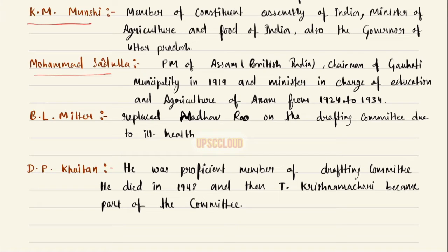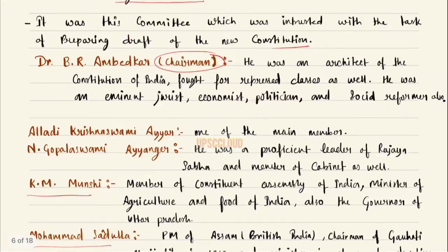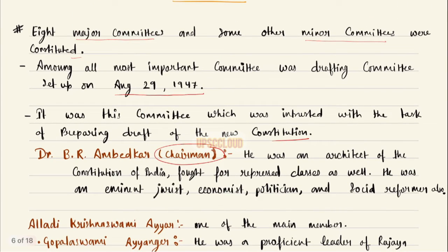Mohammad Sadullah was also Chairman of Guwahati Municipality in 1919 and Minister in charge of Education and Agriculture of Assam from 1926 to 1934. B.L. Mittal replaced Madhav Rao on the drafting committee due to ill health. D.P. Khetan was a proficient member of the drafting committee; he died in 1948, and then T. Krishnamachari became part of the committee. This completes the value-added material; now we move to the lecture part — Lecture Two.